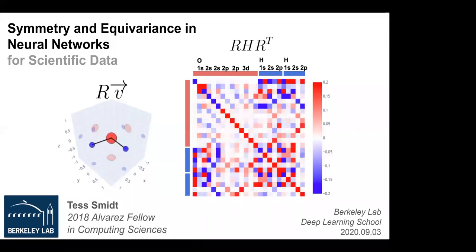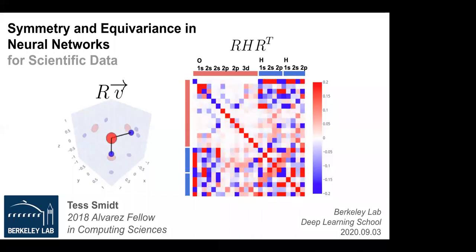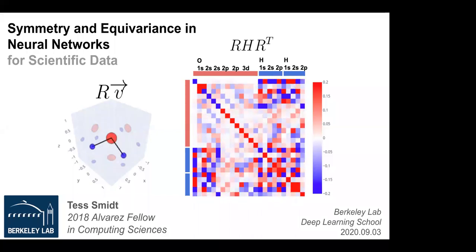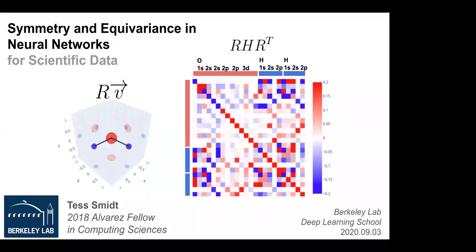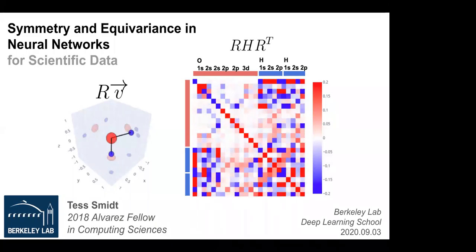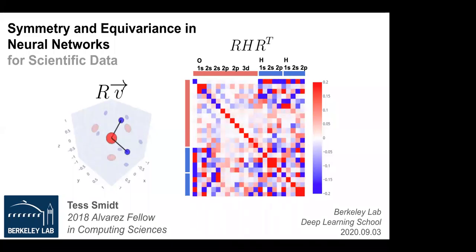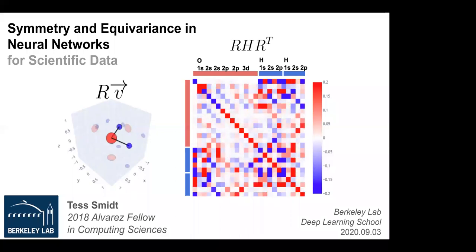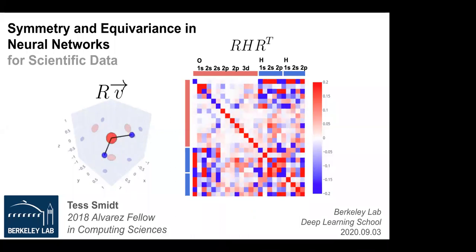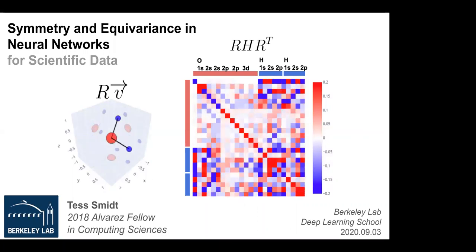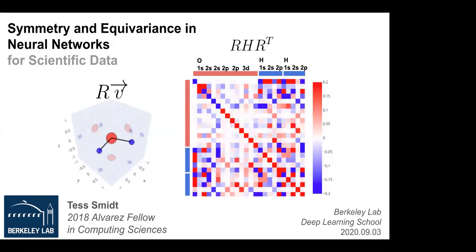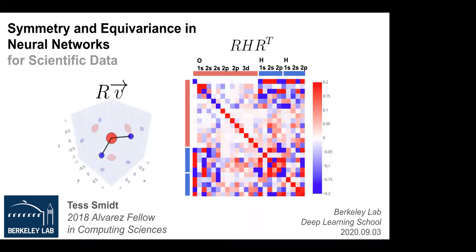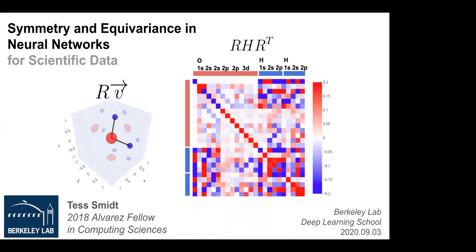Tess has been working on developing neural networks for applications in chemistry and physical sciences for a while now. She interned at Google's accelerated science team where she developed a new type of convolutional neural network called tensor field networks that can naturally handle 3D geometry properties of physical systems. This is a topic very close to what she will be talking about today. Please remember to ask questions in the Q&A, not in the chat — that helps us route questions to Tess. Please ask questions.